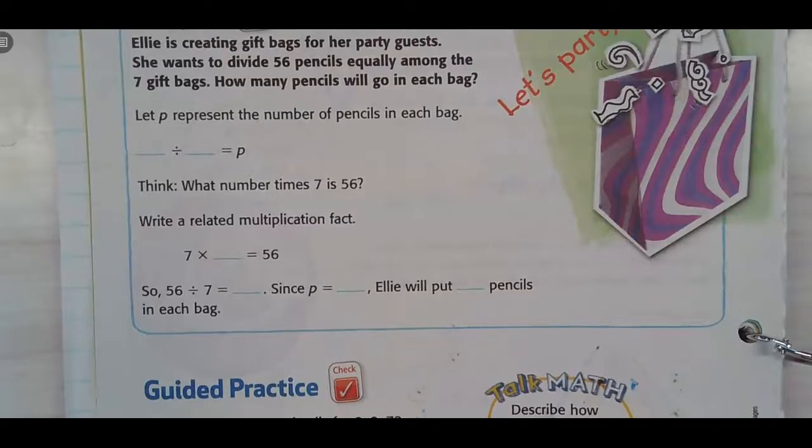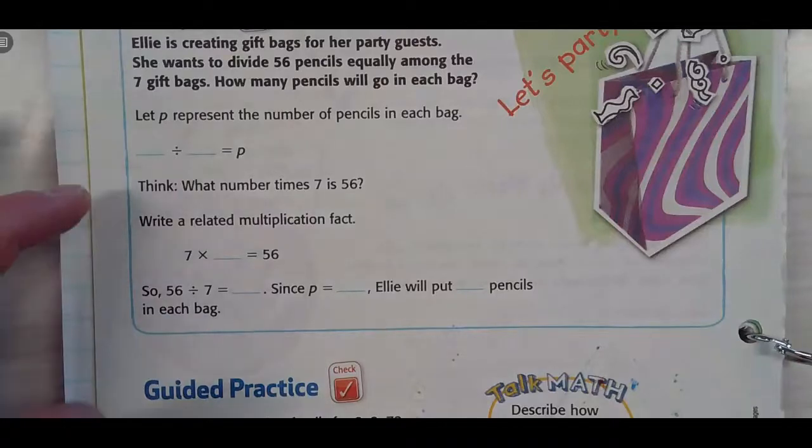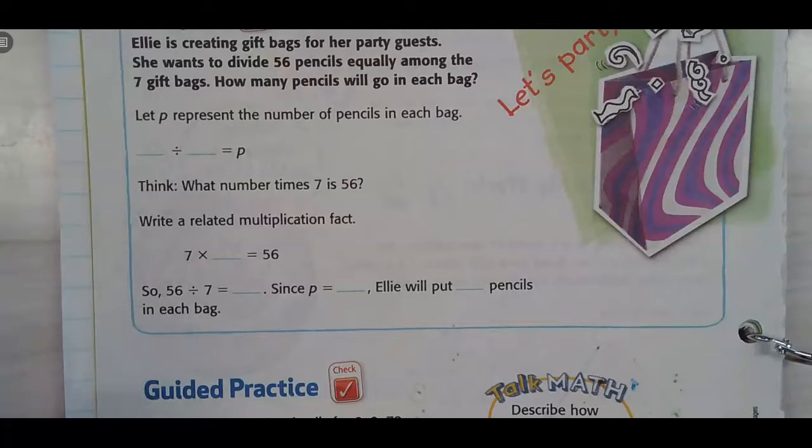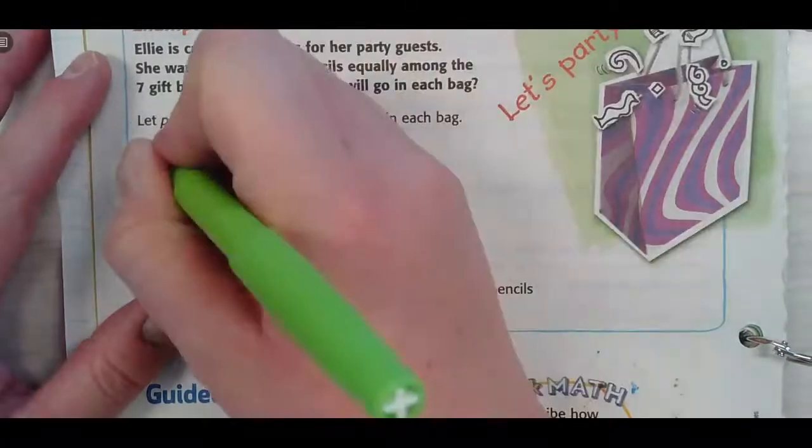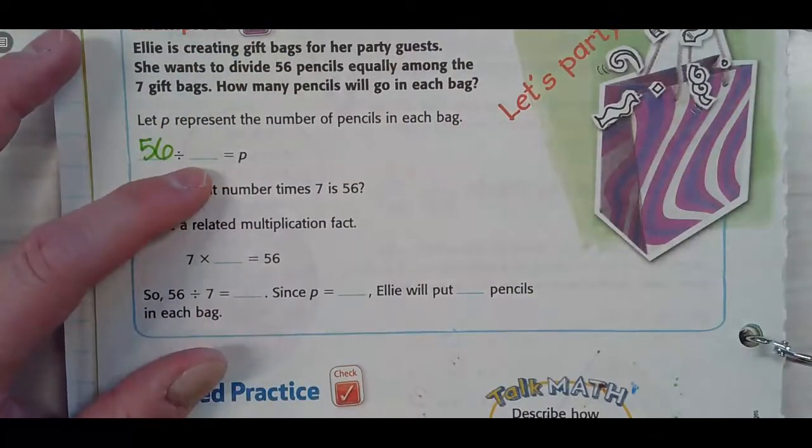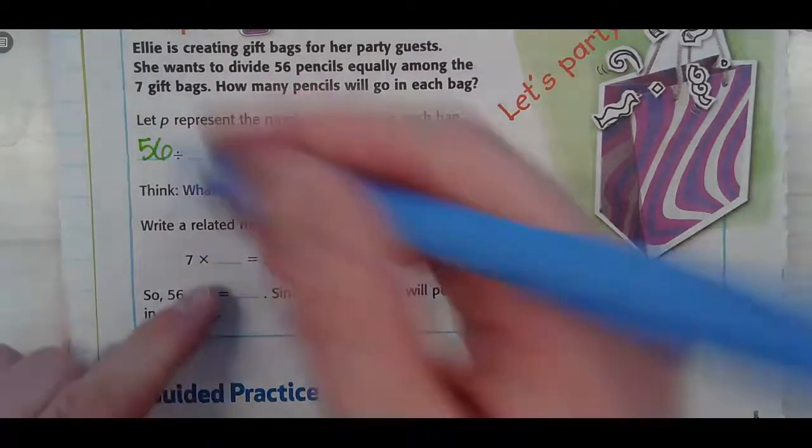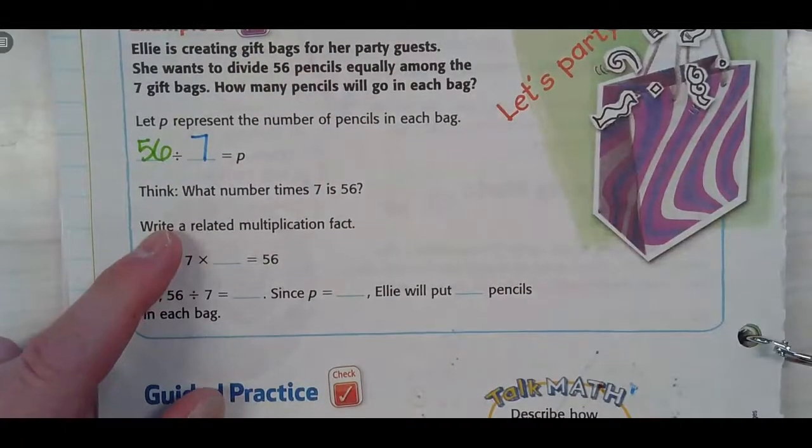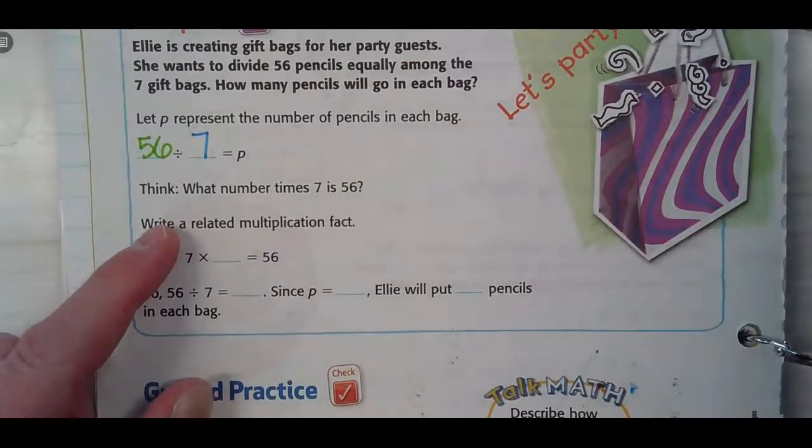So, it says Ellie is creating gift bags for her party guests. She wants to divide 56 pencils equally among seven gift bags. How many pencils will go into each bag? Well, I'm going to start with the big number, right? Because if I'm splitting a number, that's going to mean that's my big number. So, my big number I'm going to use as green because I'm splitting it into yellow and blue. So, here's my 56. And I'm dividing it by how many? Seven.